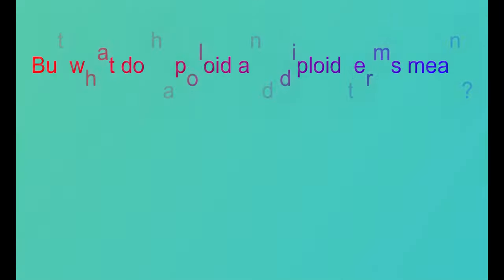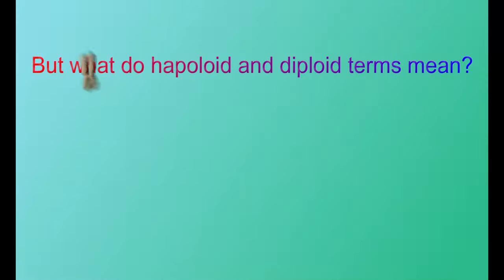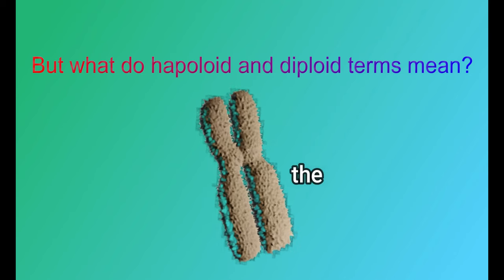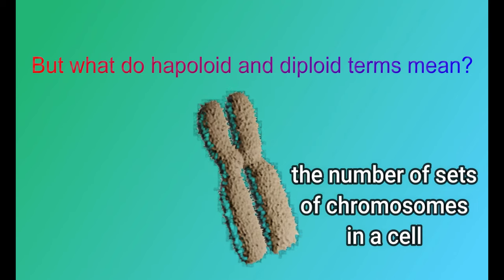But what do haploid and diploid terms mean? These terms are used to indicate the number of sets of chromosomes in a cell.